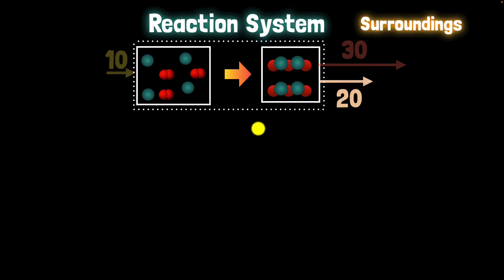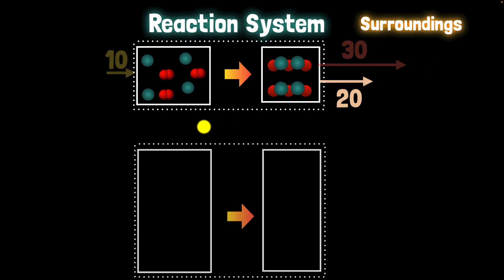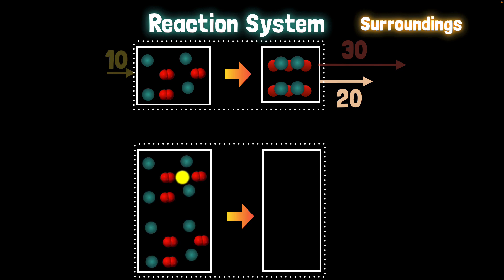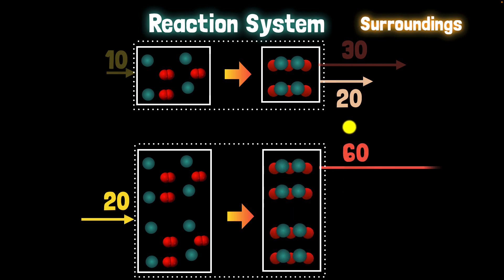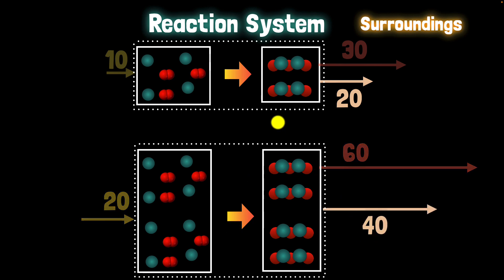What would happen if we took twice the amount of reactants? Since we have twice the reactants, we break twice the bonds, supply twice the energy, but we also get twice the products and twice the energy released. The net energy release is also twice as much. So by increasing the amount of reactants, we increase the amount of energy released or absorbed.